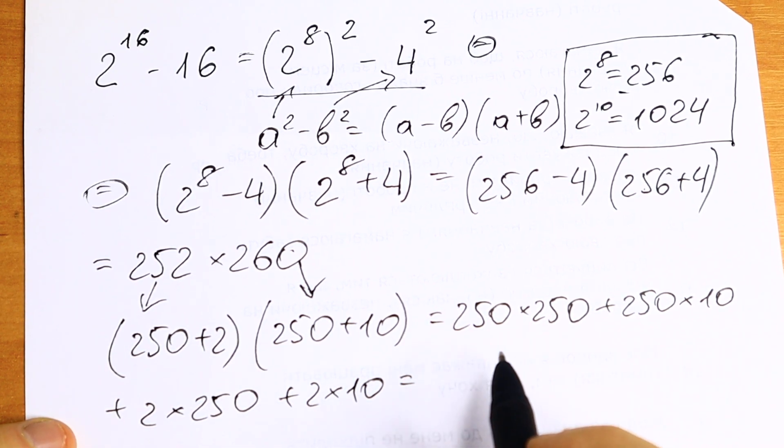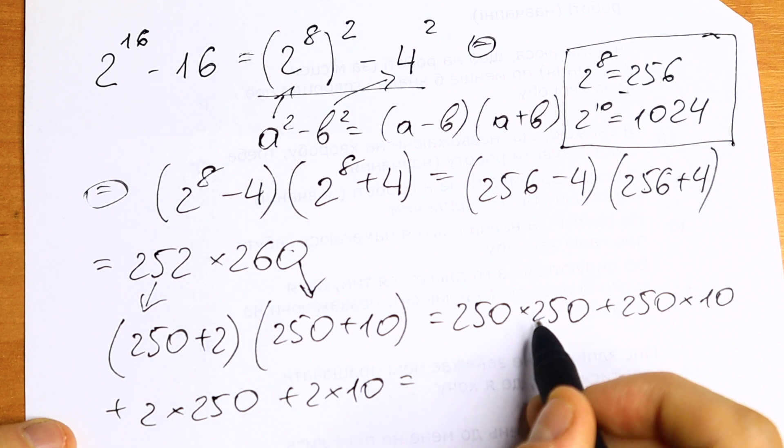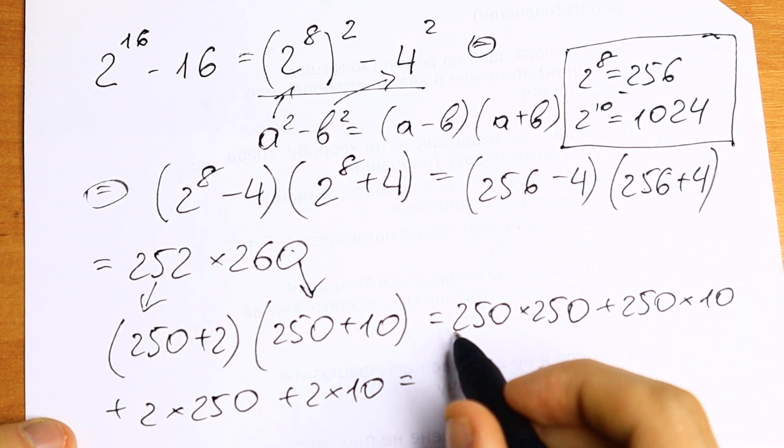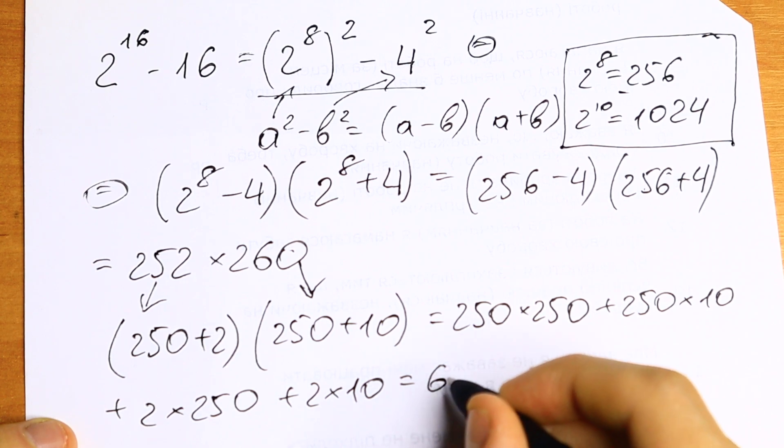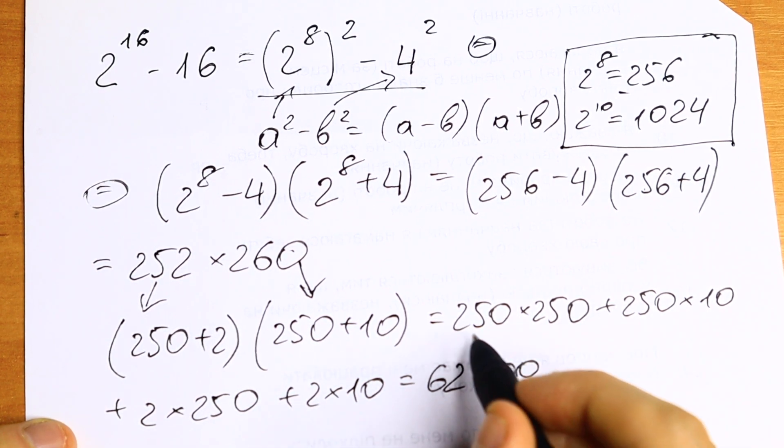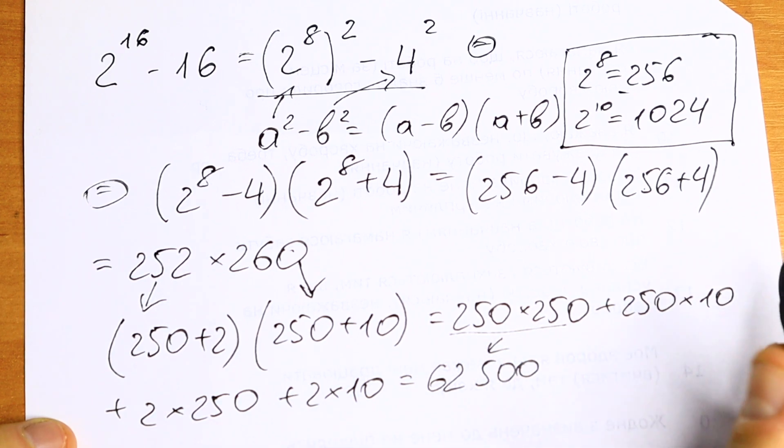Let's multiply this. First we have 25 times 25. We all know that this will be equal to 625, and we'll have two zeros. So as a result we will have 62,500. This is this element.